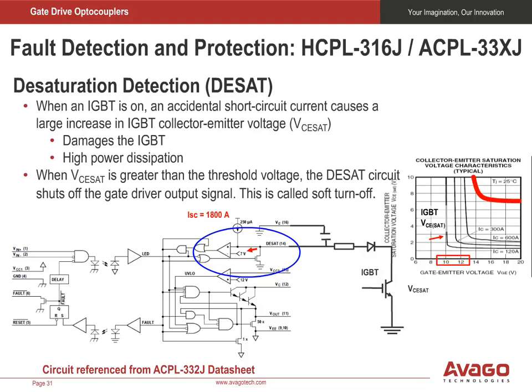But when an overload or short circuit occurs, the VCE saturation voltage will go up to, say, 8 volts. The constant current will continue charging the desaturation capacitor. As the desaturation capacitor voltage reaches the 7 volt desaturation threshold, the comparator output is activated and the protection circuit is also activated. A fault signal is sent through an optical channel to pull the fault pin low, informing the MCU or DSP about the fault. At the same time, it pulls a transistor on to discharge the gate of the IGBT through the gate resistor. Since this transistor is about 50 times smaller than the actual turn-off transistor, the IGBT gate voltage will turn off gradually, activating the so-called soft shutdown.